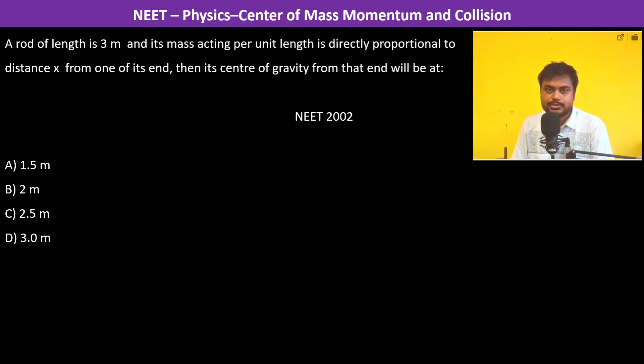A rod of length 3 meters has mass per unit length directly proportional to the distance x from one of its ends. So this is the rod, and at x, the mass per unit length is k times x.